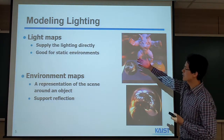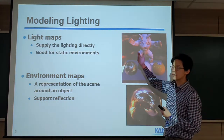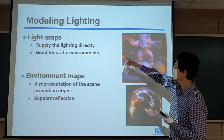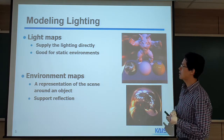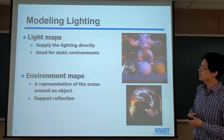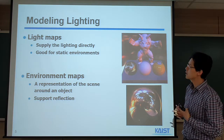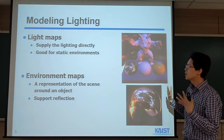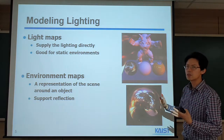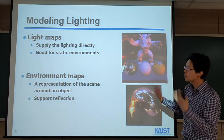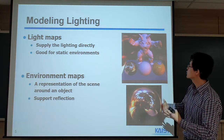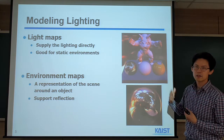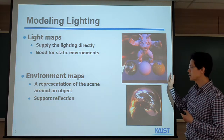The light map is a type of texture mapping applied to a texture. It supplies the lighting directly. Here we assume that the lighting environment doesn't change, so we actually pre-compute — we bake this kind of light map — and use that for representing complex lighting within the scene.